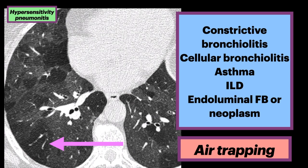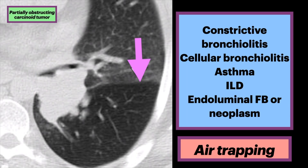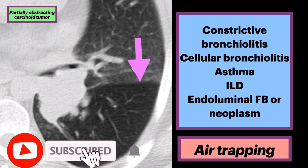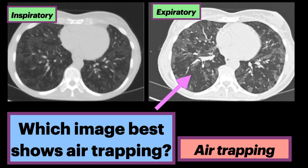Areas of air trapping may be accentuated by surrounding normal lung and ground glass opacity foci. Lastly, here's an axial CT of someone with a centrally partially obstructing carcinoid tumor. There is hyperlucency of the visualized left lower lobe due to obstruction by the tumor and resulting air trapping. You now know a ton about air trapping — please subscribe for more anatomy and radiology videos.